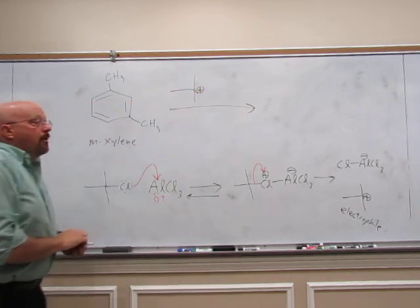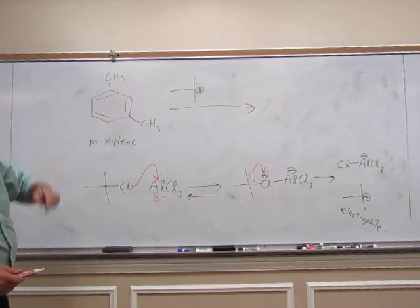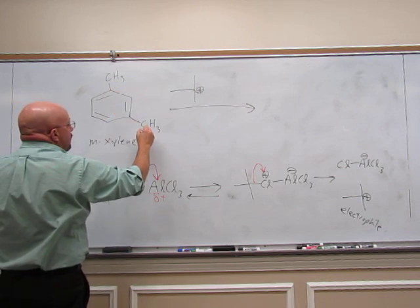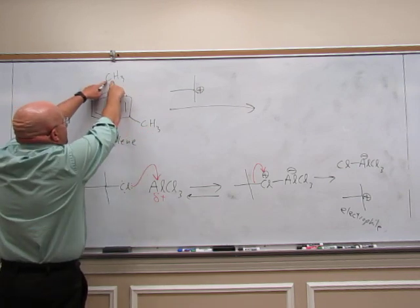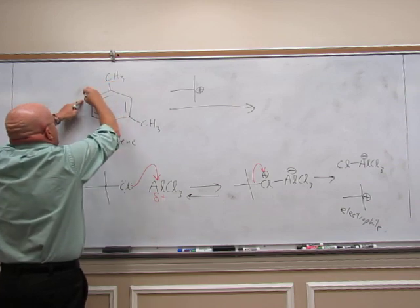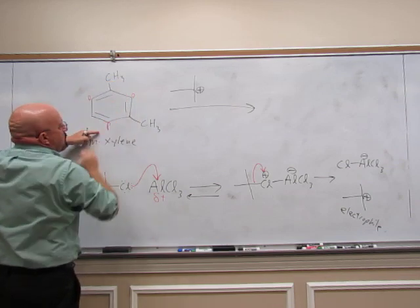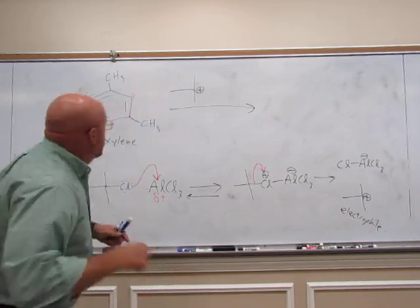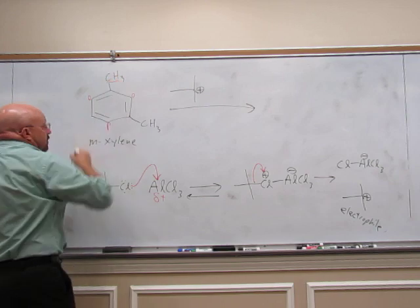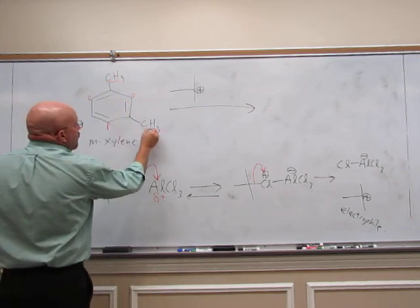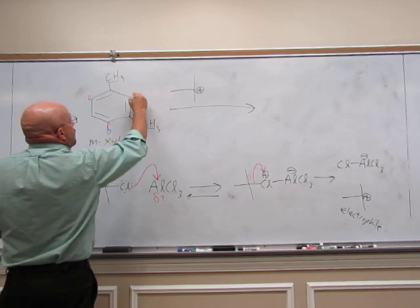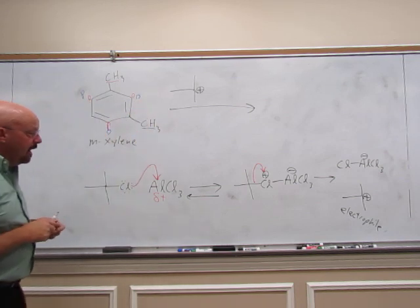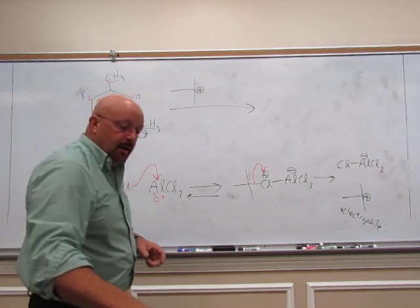Now we have to decide where it's going to go. The groups that are already on the ring direct the next one where to go. These methyl groups are ortho-para directors. Let's look at the top one here. This is ortho to it. Here is para to it. If you look at the other methyl, this is ortho to it. And this is the para to that methyl. This is where the groups are telling it to go.